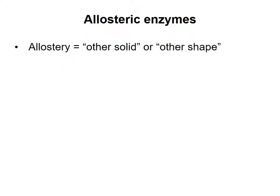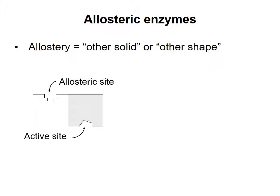Allostery is a word coined by Nobel Prize winner Jacques Monod, from Greek words meaning 'other solid' or 'other shape.' Like all enzymes, allosteric enzymes have an active site where catalysis takes place. Allosteric enzymes also have at least one regulatory site at which specific molecules, called effectors, can bind. The regulatory or allosteric site is often found on a different subunit than the active site, and these different subunits are often called the regulatory and catalytic subunits, respectively.